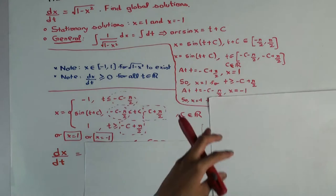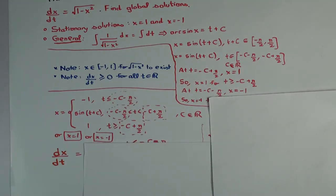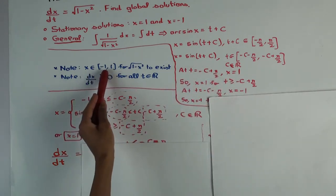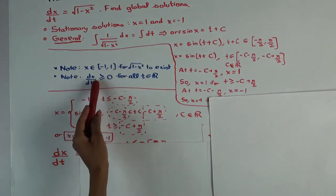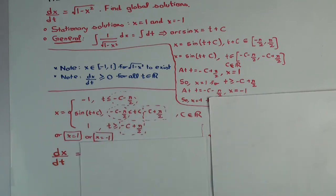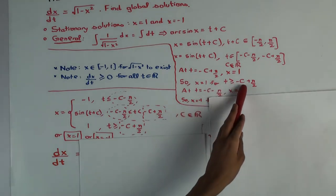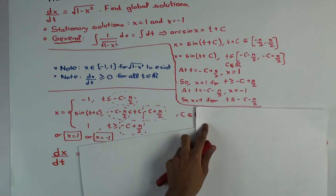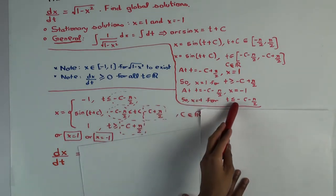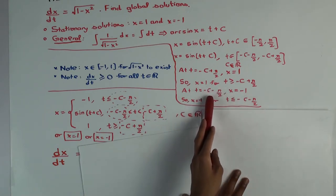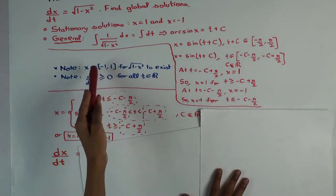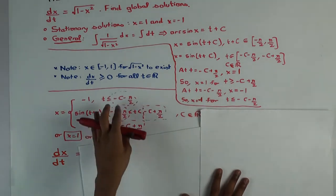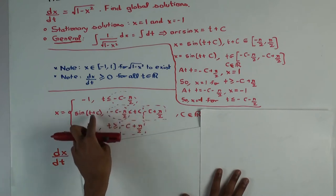After you got the solution in this interval, you want to extend to all real numbers. If t is to the right of this point, the function has to remain 1, because already at this point it's 1. We observed that the function has to remain between -1 and 1, and it cannot ever go down — it has to be constant or increasing. That forces the function to remain 1 to the right of -c + π/2. Similarly, when t is to the left of -c - π/2, the function has to remain -1, because it's already -1 at that point. So the function is -1 to the left of that point, 1 to the right of the other point, and in between it's sin(t + c).